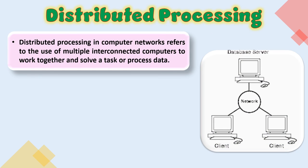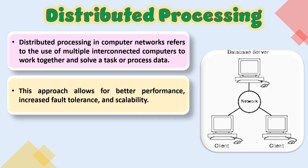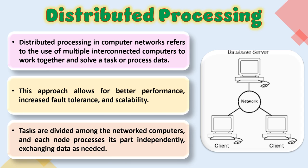Distributed processing in computer networks refers to the use of multiple interconnected computers to work together and solve a task or process data. This approach allows for better performance, increased fault tolerance, and scalability. Tasks are divided among the networked computers, and each node processes its part independently, exchanging data as needed.